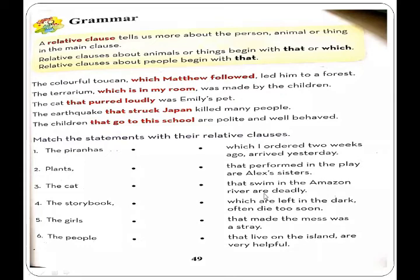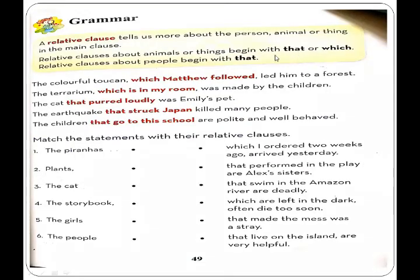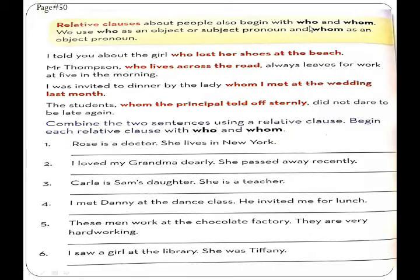I hope you have done the exercise with me. Now I am moving towards the next page. We read about relative clauses 'that' and 'which.' We use 'that' and 'which' with animals and things, and 'that' only with people. Now we are moving towards the relative clauses 'who' and 'whom' — we will discuss their uses.